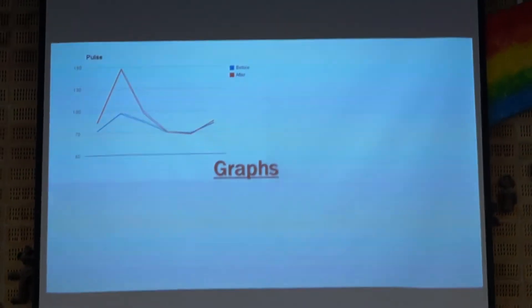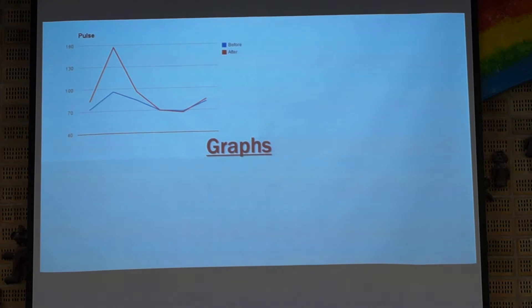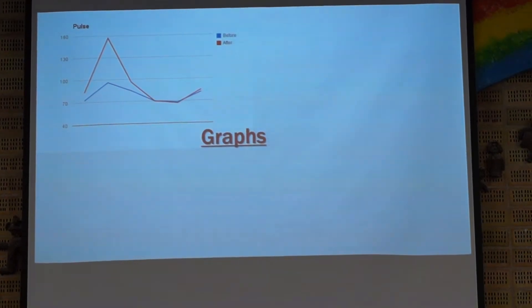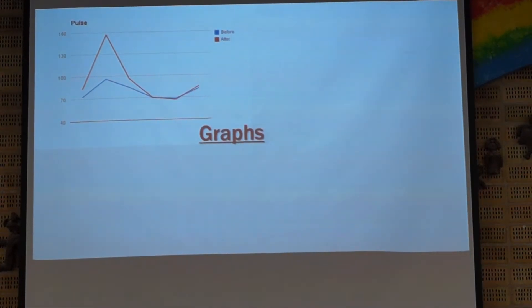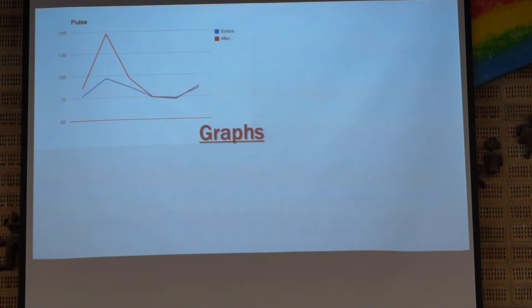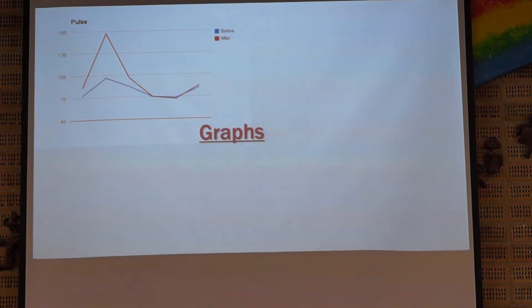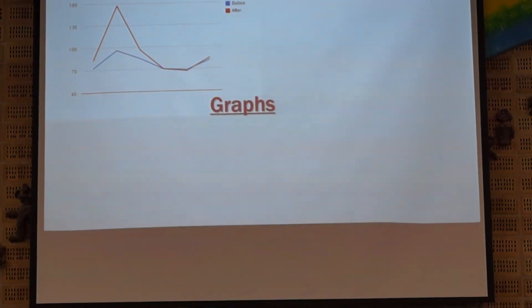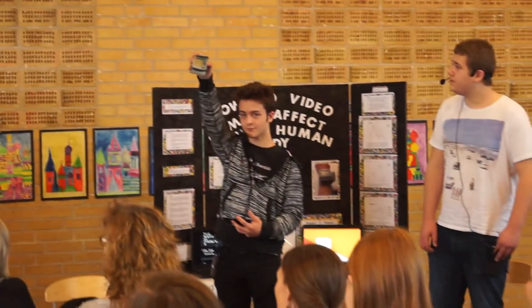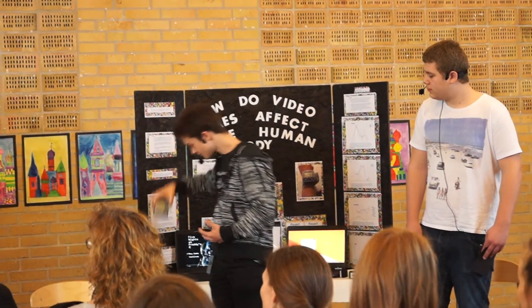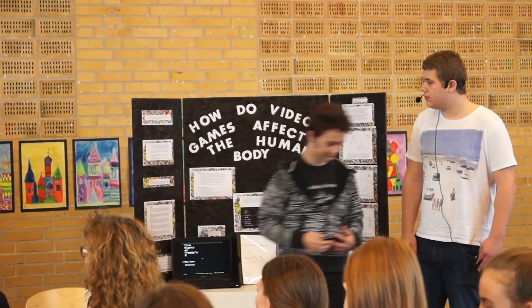The first graph is the pulse, and as you can see, there is a very drastic change from before and after. However, we cannot conclude that this is precise, because we used a blood pressure monitor on the wrist instead of the upper arm as is standard. So it's not really precise, but it's as good as we could get. We measured the time using a stopwatch and counted beats per minute.